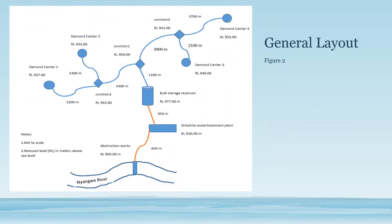This is a typical general network layout for the Tipeese local municipality. As you can see down here, we have our Nyangwe river and then we have our pipe which is 650 meters, and then we have our Shikahilo water treatment plant, and then we have the bulk water storage and then this is the networking. These are the pipes going to each township. As you can see, we have demand center one, demand center three, and demand center four.